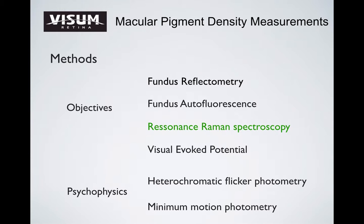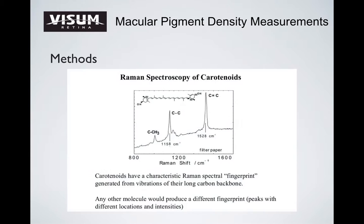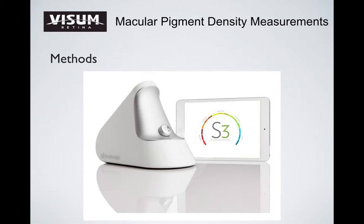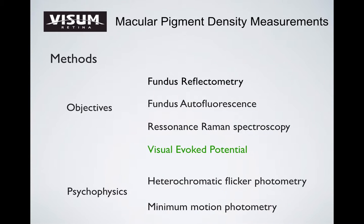The next method is resonance Raman spectroscopy. Carotenoids have a characteristic Raman spectral fingerprint. Carotenoid molecules shift blue laser light to green, and equipment is currently available to detect cutaneous — but not yet ocular — carotenoids with this method.